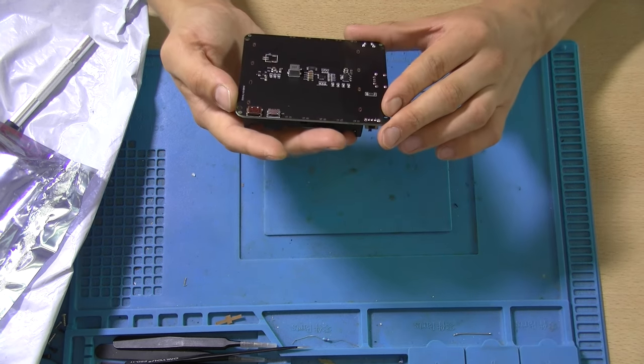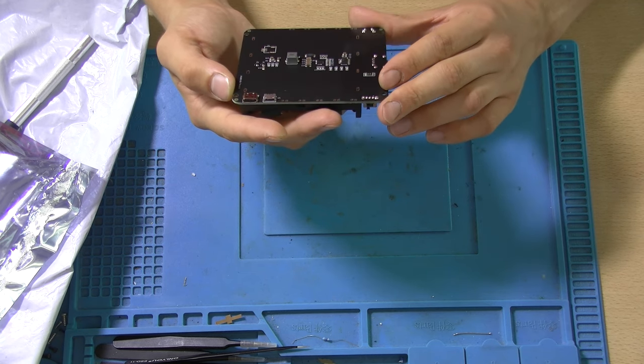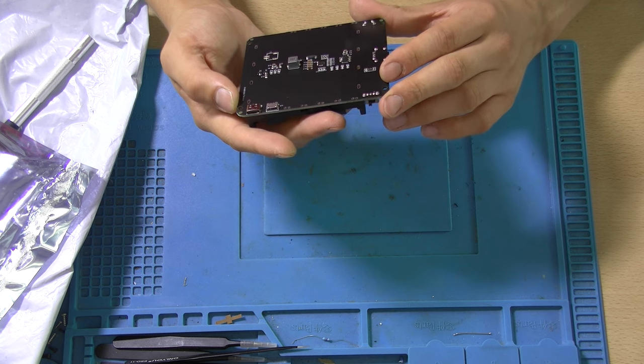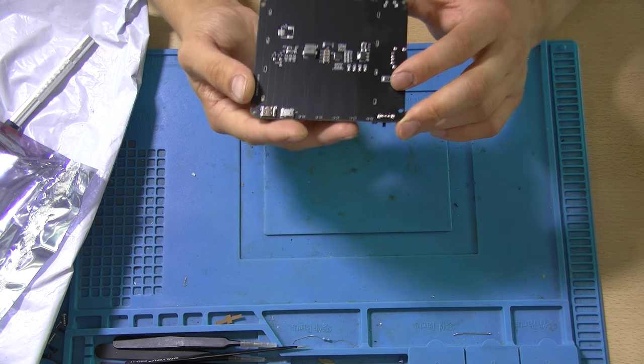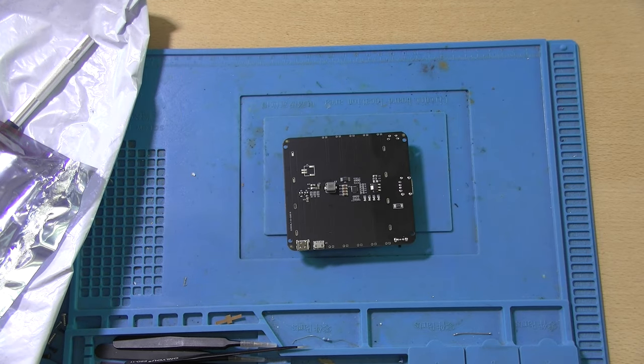So yeah, there is some flux residue on here here and there, but I think that the actual contacts have been soldered on well, good enough. I'm not planning to draw the full, I don't know, 8 amps or something. So yeah, let's see, is there any LED on here? There is, so there are four status LEDs.